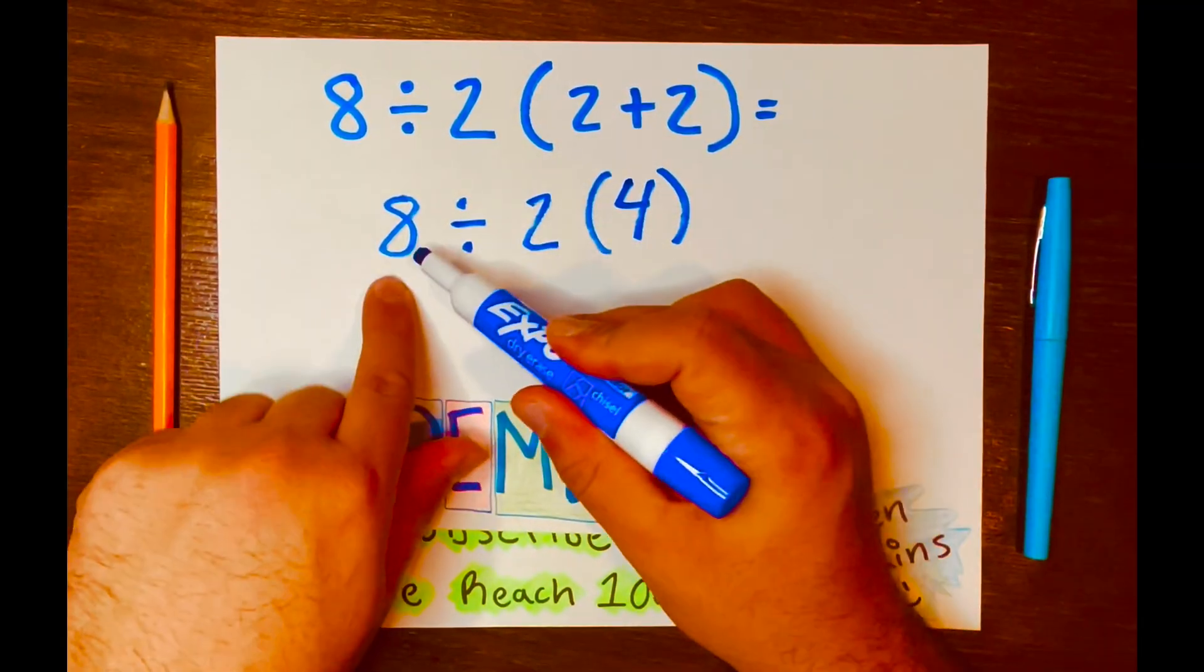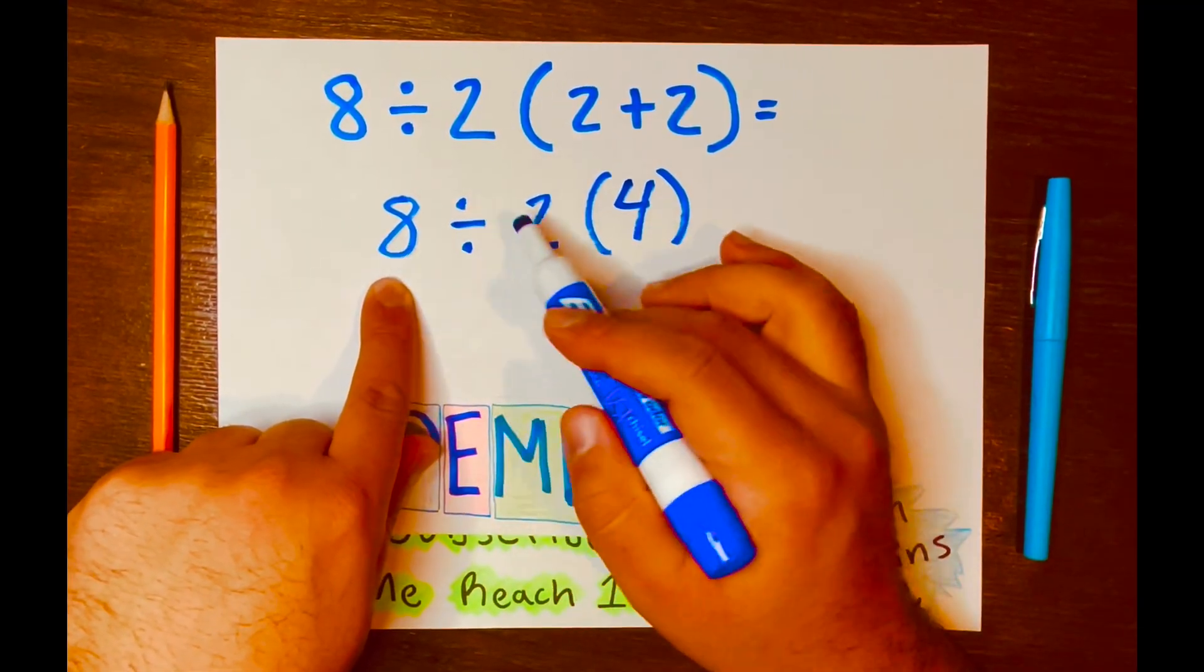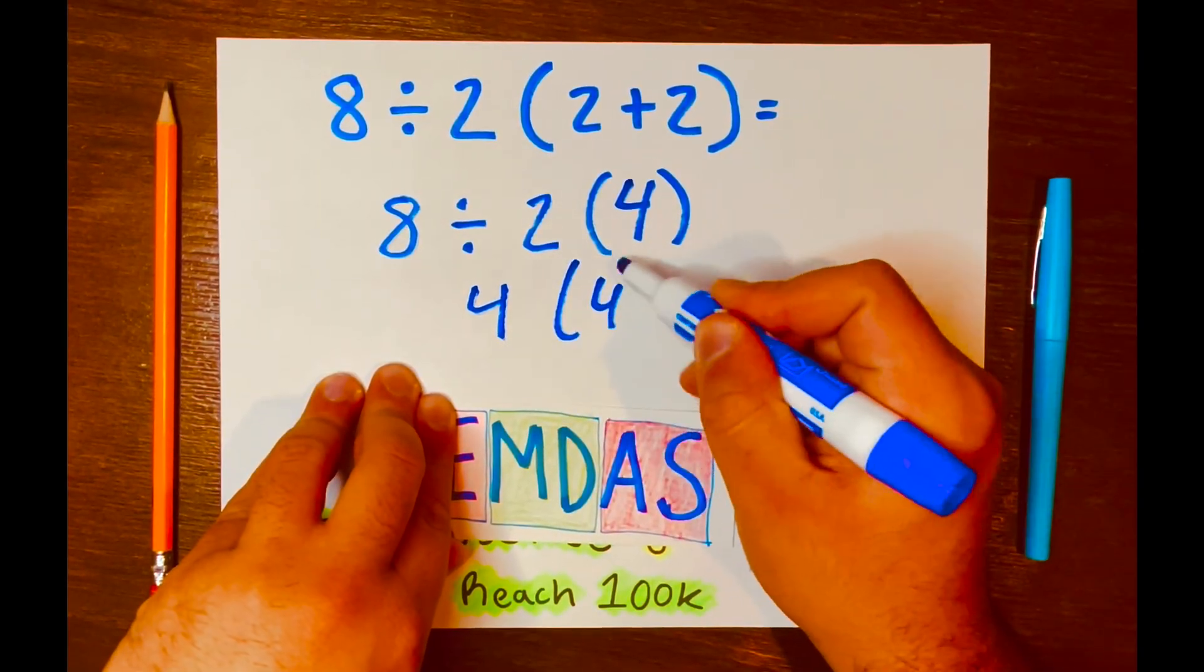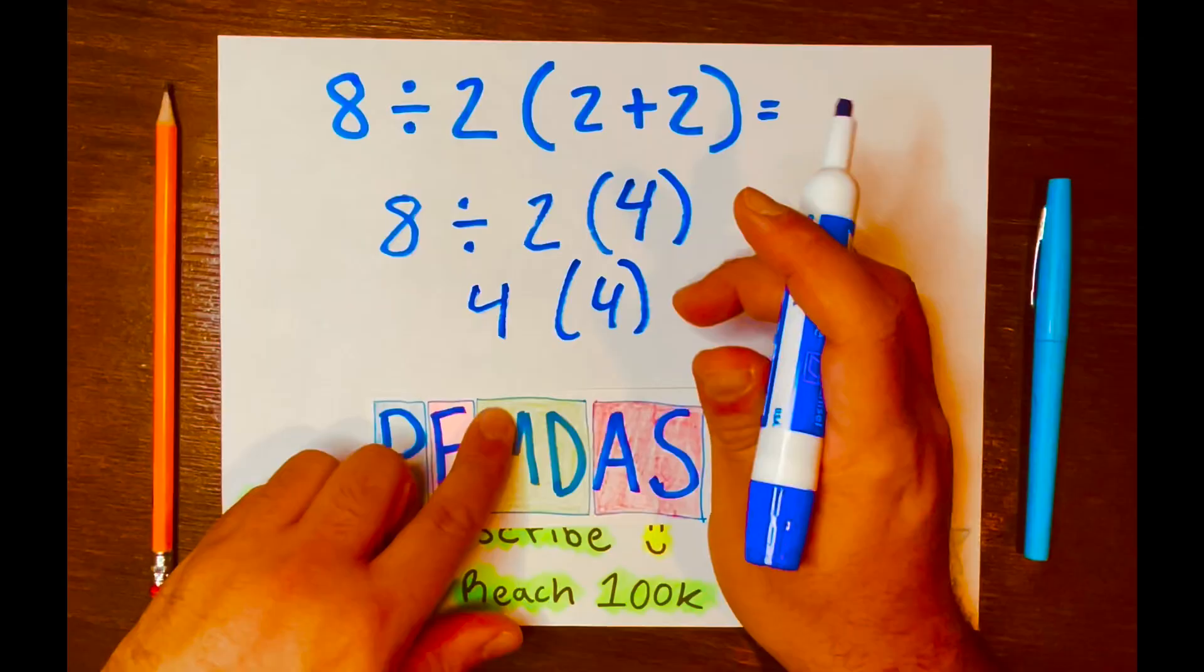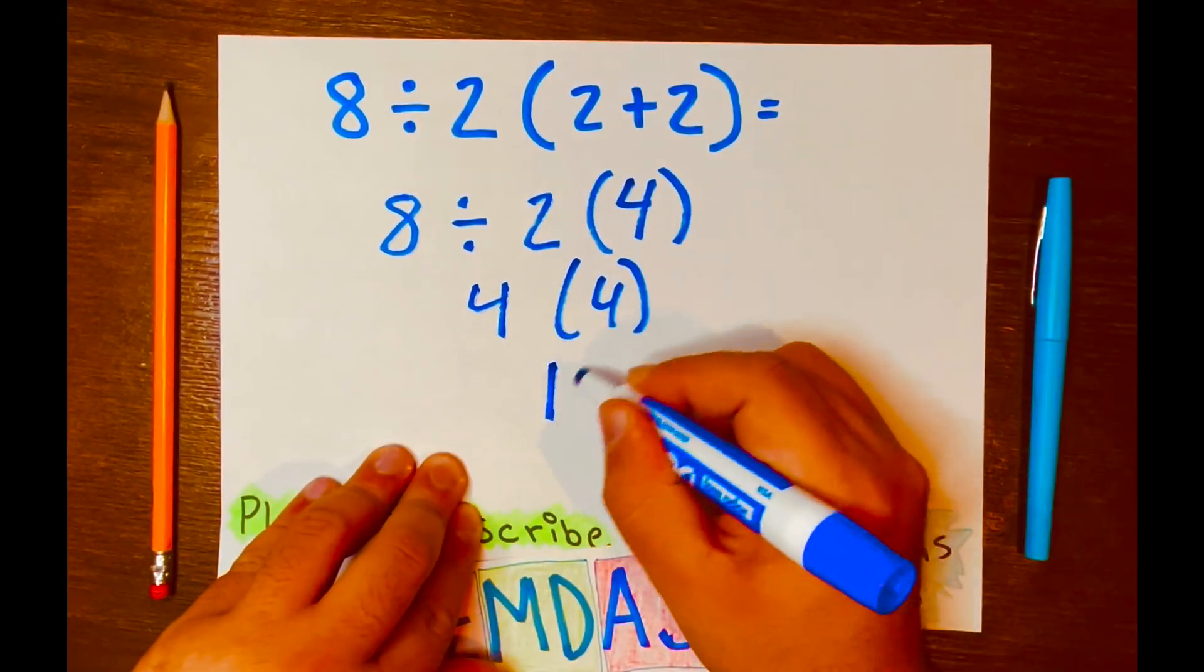So, 8 divided by 2 will go first. So, 8 divided by 2 is 4, and then bring down the 4 with the parentheses. And now we have 4 times 4, and 4 times 4 is 16.